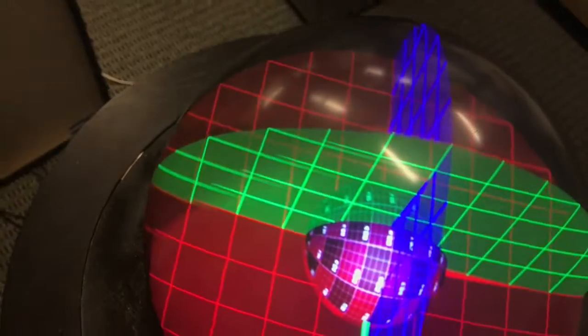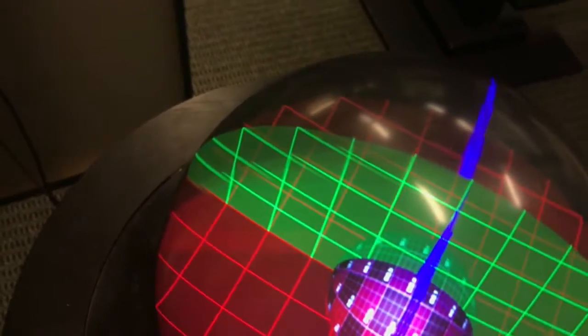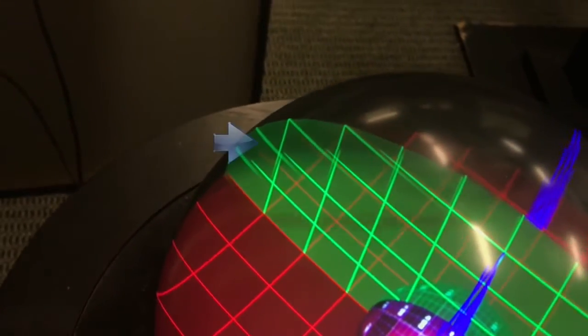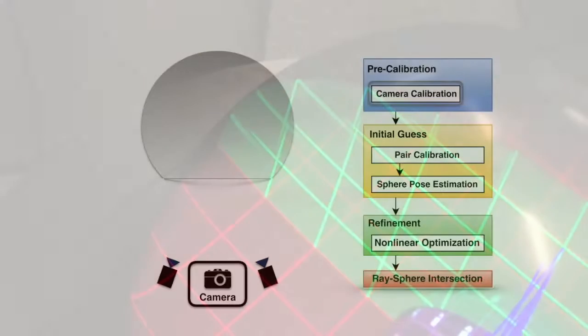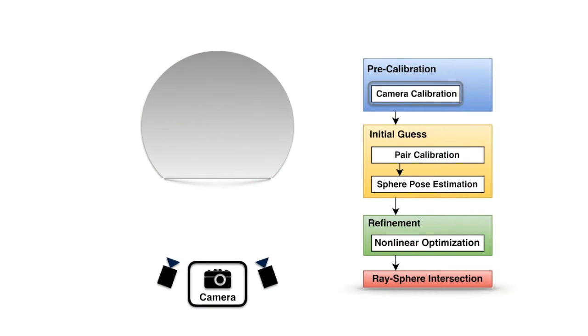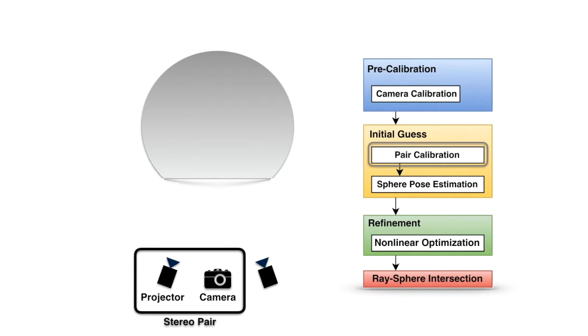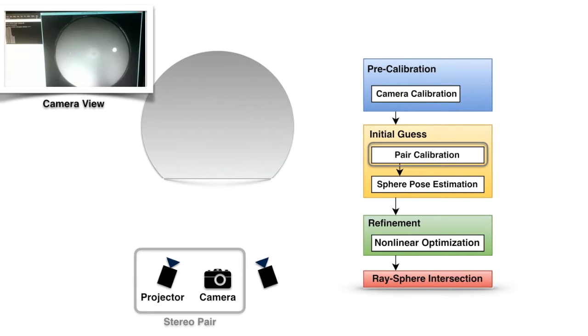Failure to do so causes artifacts like ghosting and distortion. We created an automatic calibration approach to do this using a single camera that sees most of the projected area.